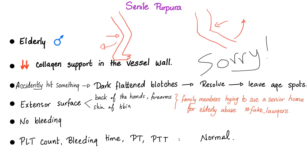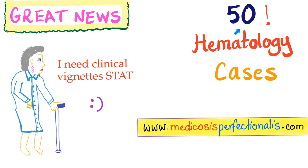In senile purpura there is no bleeding. Platelet count is normal, bleeding time is normal, PT and PTT are normal. By the way, on my website I have 50 hematology cases about bleeding and coagulation disorders. Warning — they are really hard, but they are worth it.